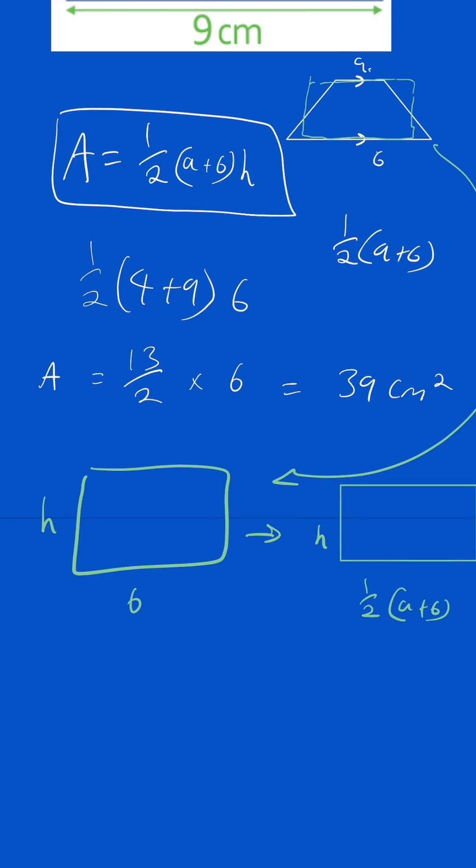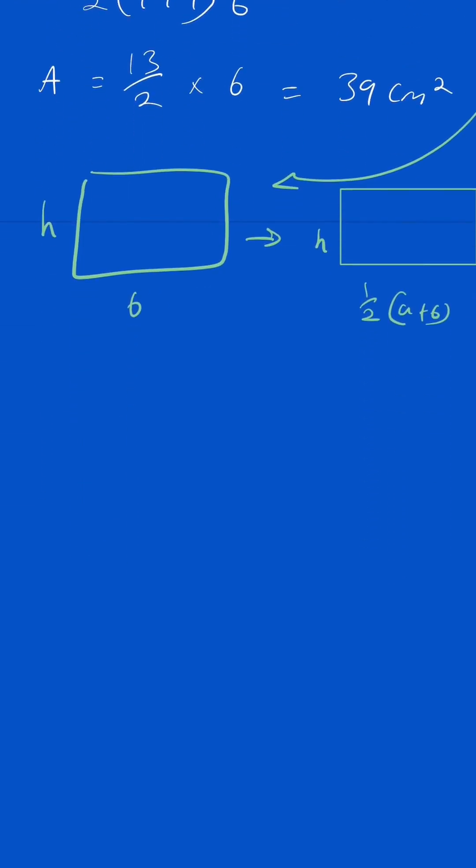Now, that's not the mind-blowing part. The mind-blowing part I've realized is this formula, a half (a plus b) times height, can work out the majority of shapes' areas. We've just proven how it works out the area of a trapezium,